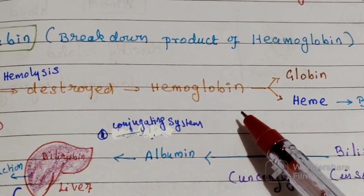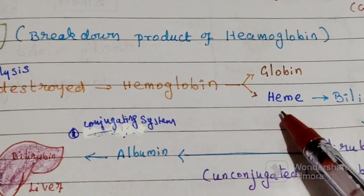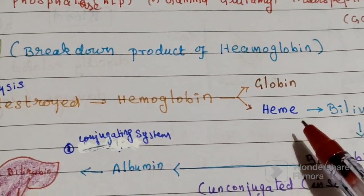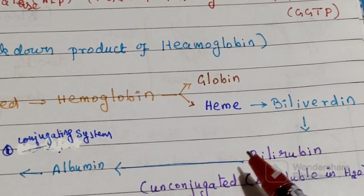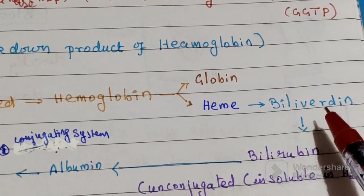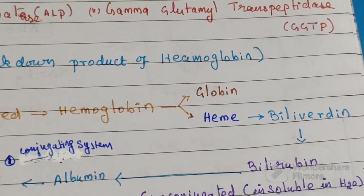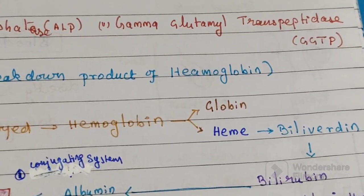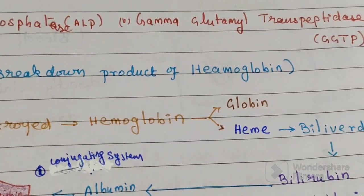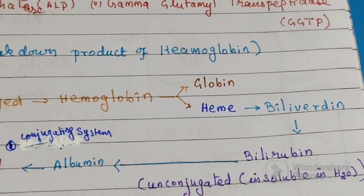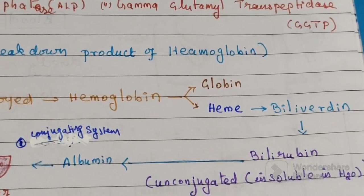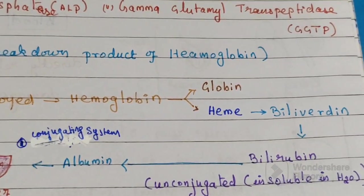This hemoglobin further breaks down into heme and globin. This heme component is converted into biliverdin, which is then converted into bilirubin. This bilirubin is the unconjugated form, which is insoluble in water.